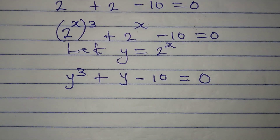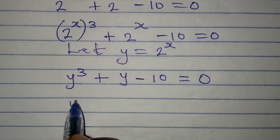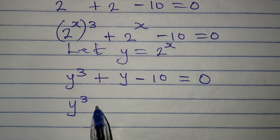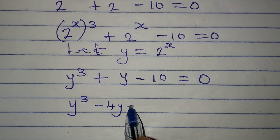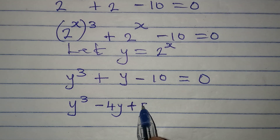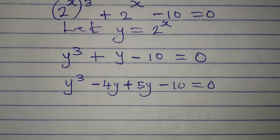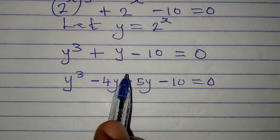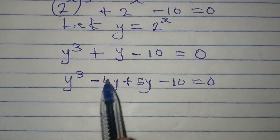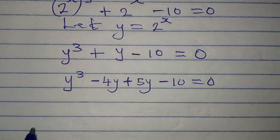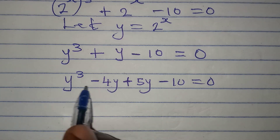Now let's see if I can factorize this in any way. I'm going to have y to the power of 3 then minus 4y plus 5y minus 10 equals zero. What I've done here is rewrite y in this form because minus 4y plus 5y gives us y, and now we can group into two and factorize.